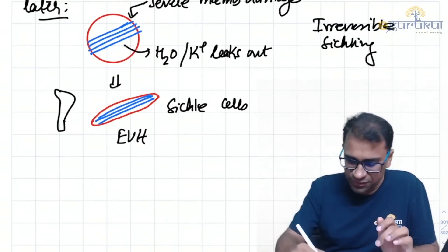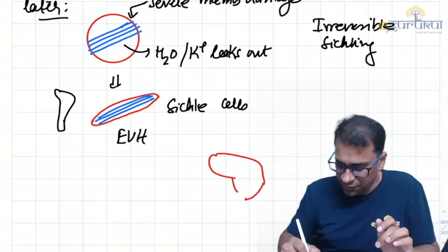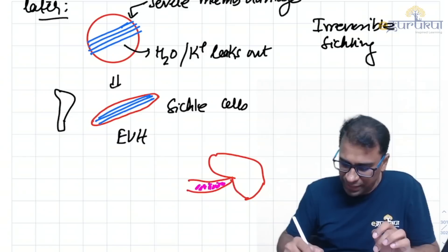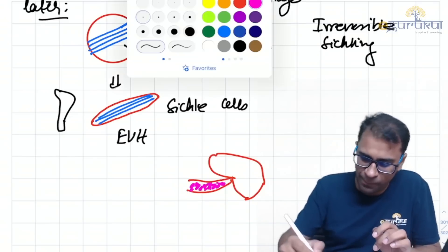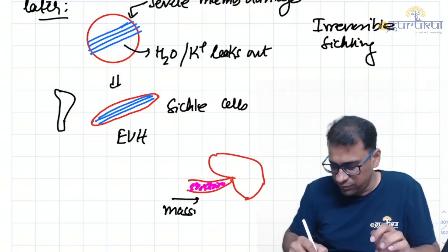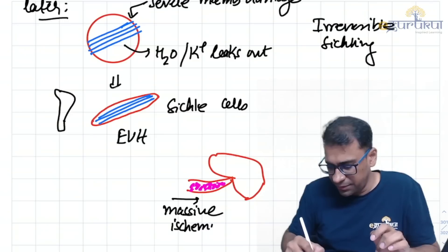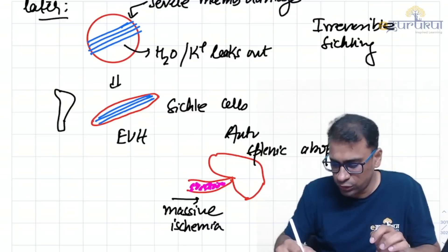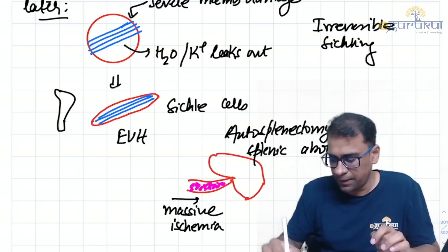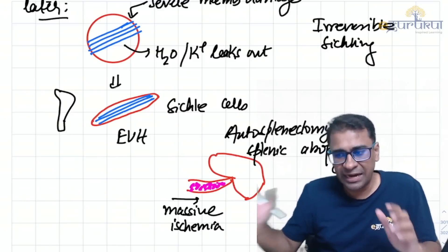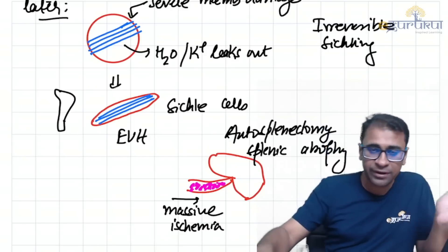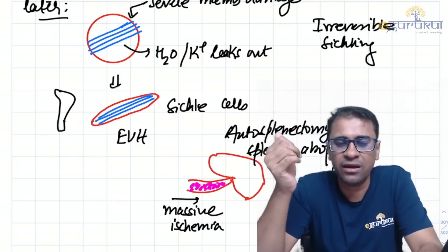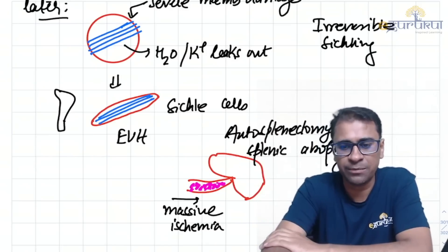The same process also occurs in the splenic artery — sickle cells accumulate, eventually causing massive ischemia and splenic atrophy. This is called autosplenectomy. Remember, initially the RBC shape is normal; it is only later that the RBC changes to a sickle shape.